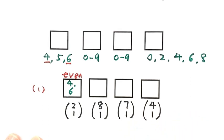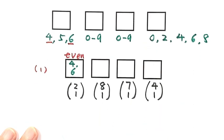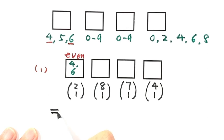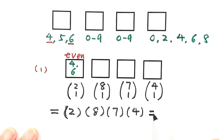Combining all the possibilities, we have 2 choose 1 times 8 choose 1 times 7 choose 1 times 4 choose 1. That's 2 times 8 times 7 times 4, which gives us 448.